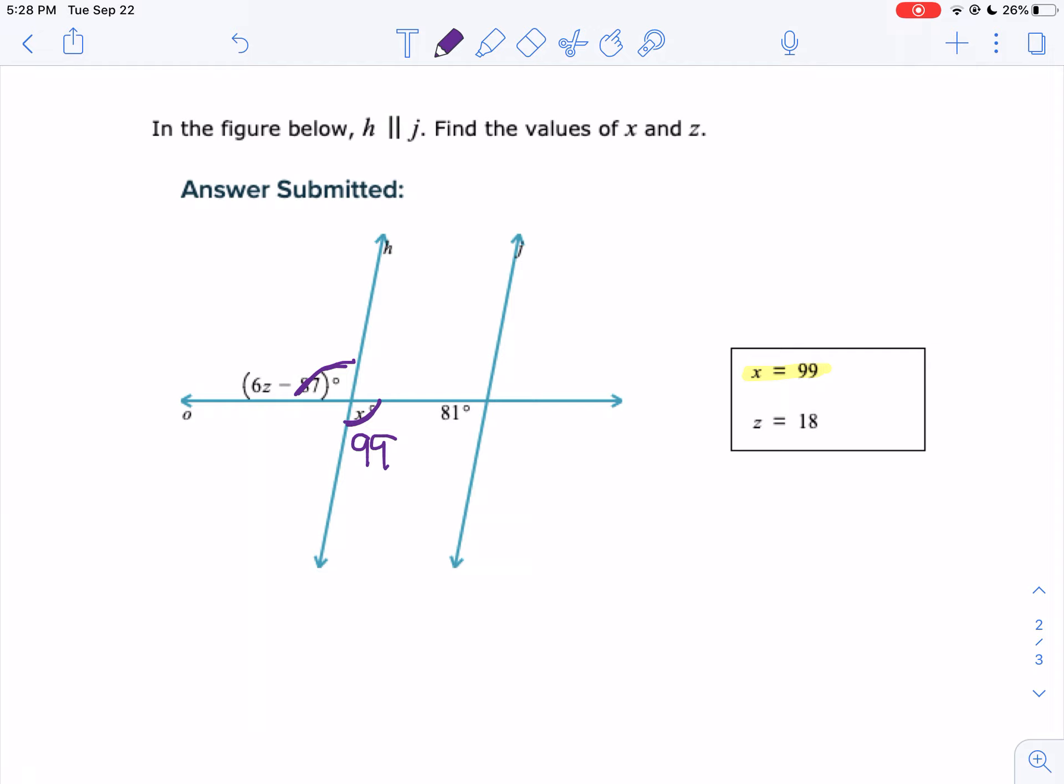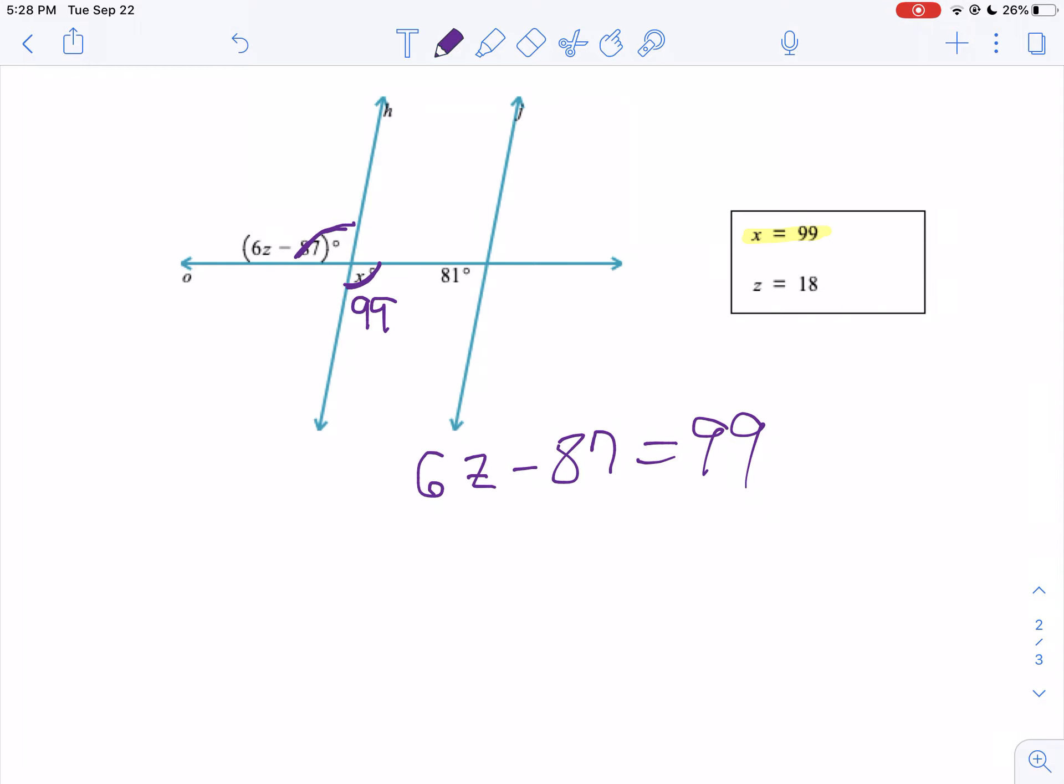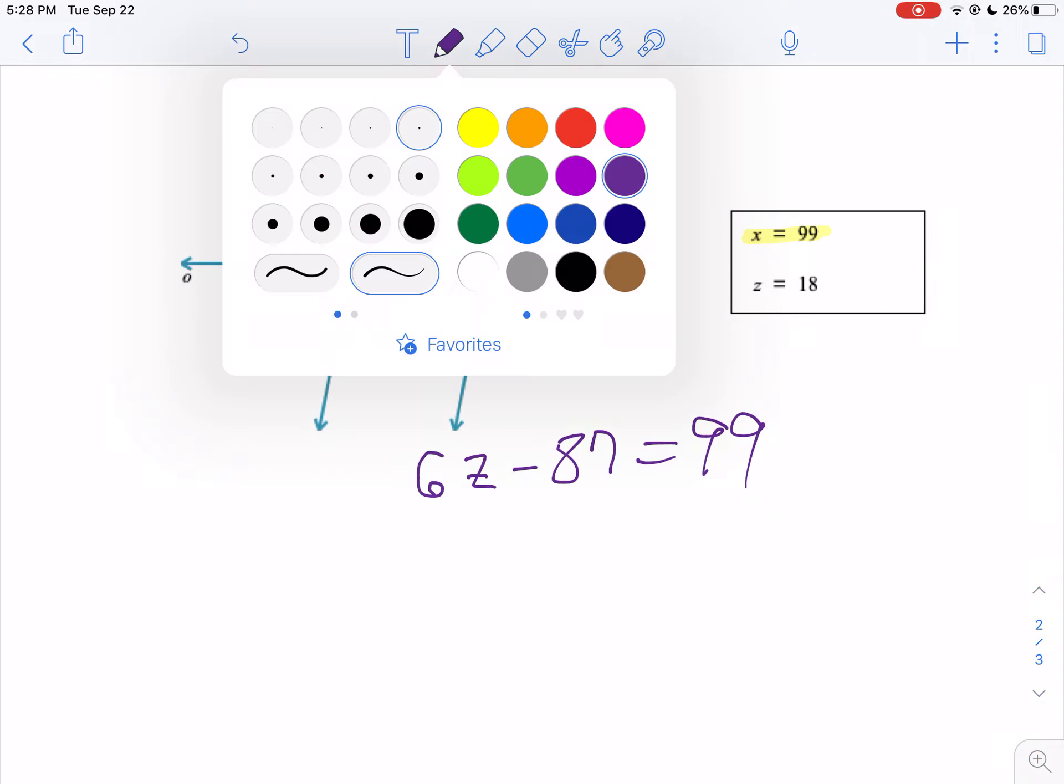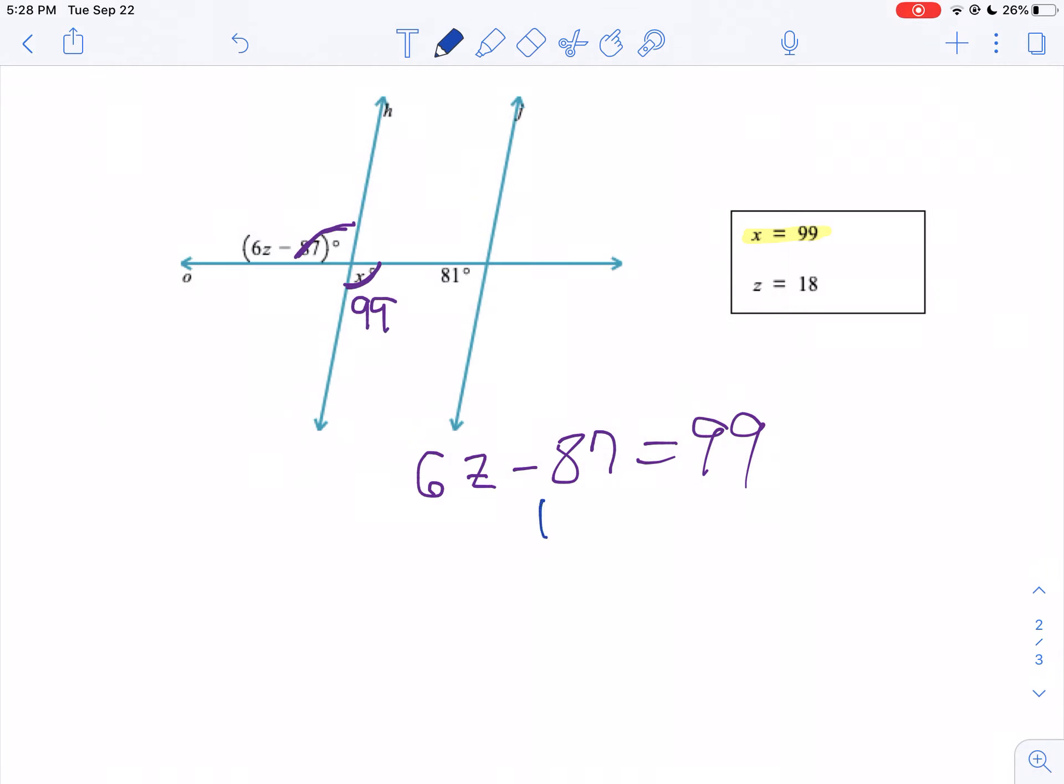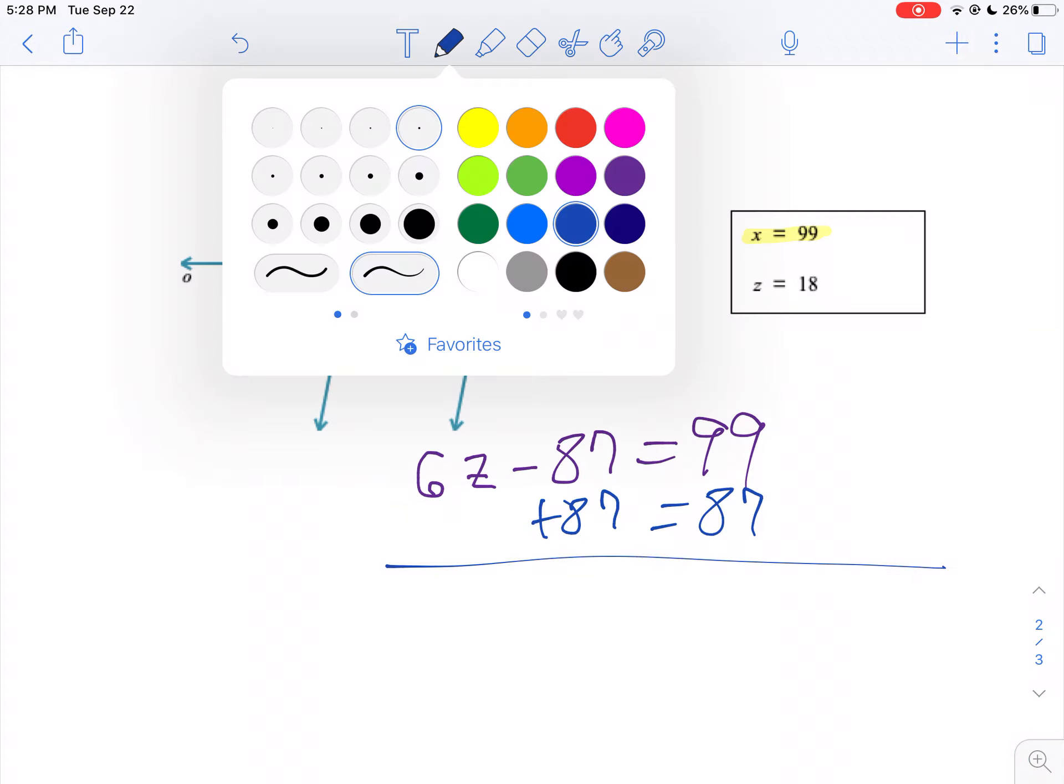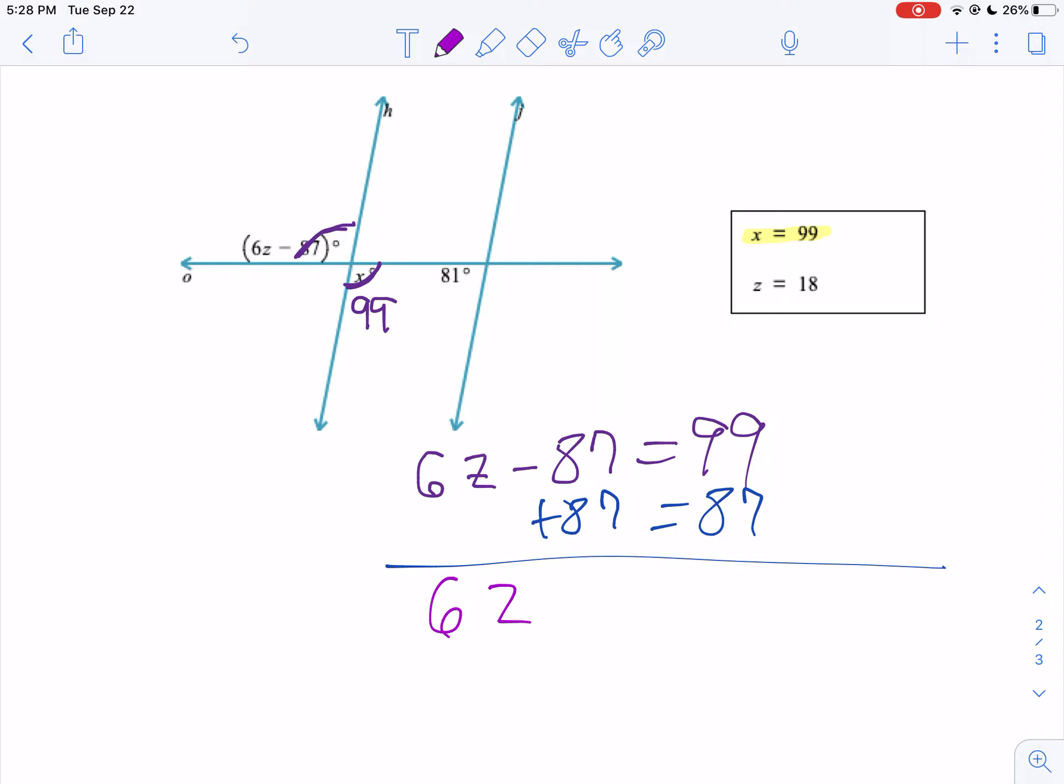So what I wanted to see, you submit for an answer, submit your work, take a picture of your work, is I want to see 6Z minus 87 equals 99. Then we'll solve for Z. So we're going to add 87 to both sides. Bring down the 6Z, the 87's, they make 0, so you don't have to write anything there, equals, well 99 plus 87 would be 186.